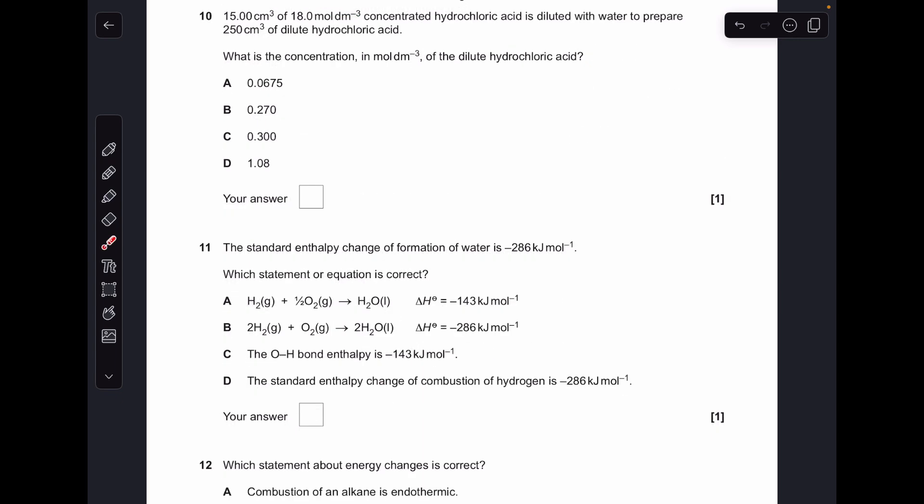Moving on, number ten. First thing we're going to do is work out how many moles of HCl we've got: concentration times volume, that comes out at 0.27 moles of HCl. Those moles are going to be in that 250 cm cubed diluted solution, so the concentration of that will be moles over the volume in decimeters cubed, 1.08, option D.